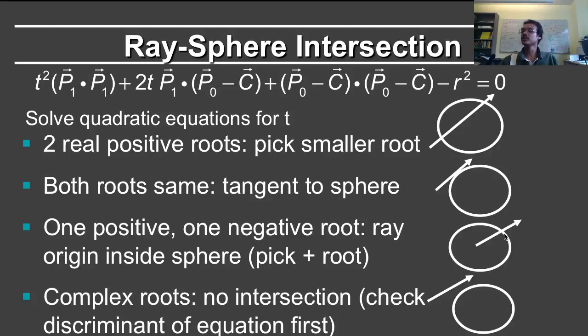And in this case, what you want to do is pick the positive root, because a ray does not have t less than 0. And if you have complex roots, that means there is no intersection between the ray and the sphere. So before you try to solve this equation, you should check to make sure that the discriminant is positive.